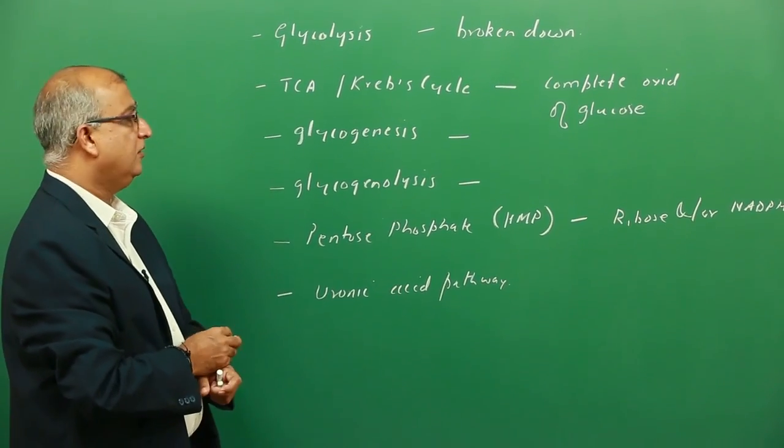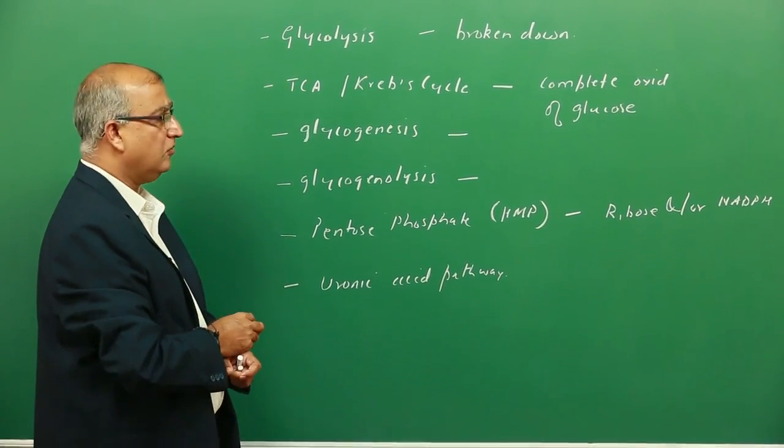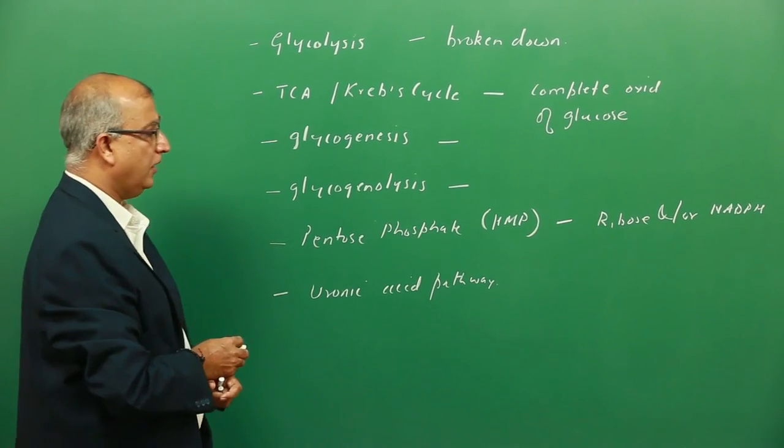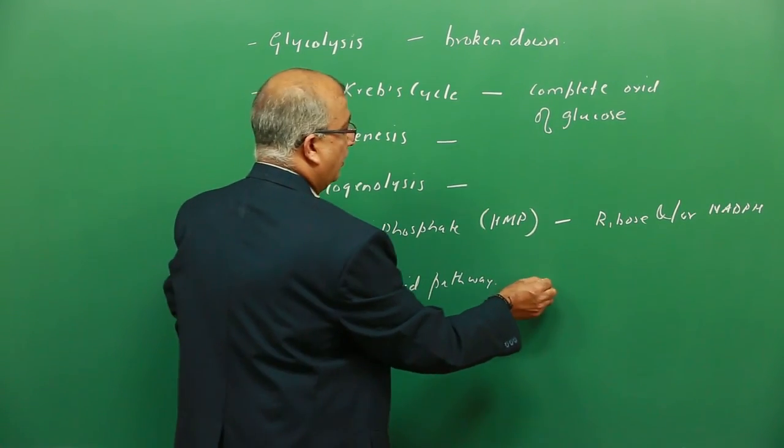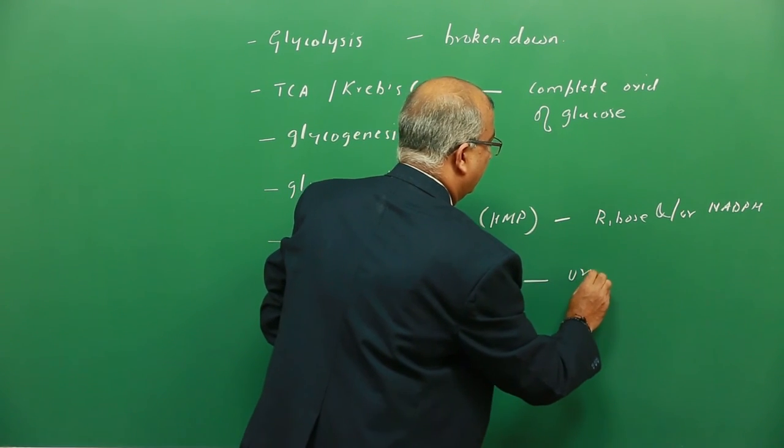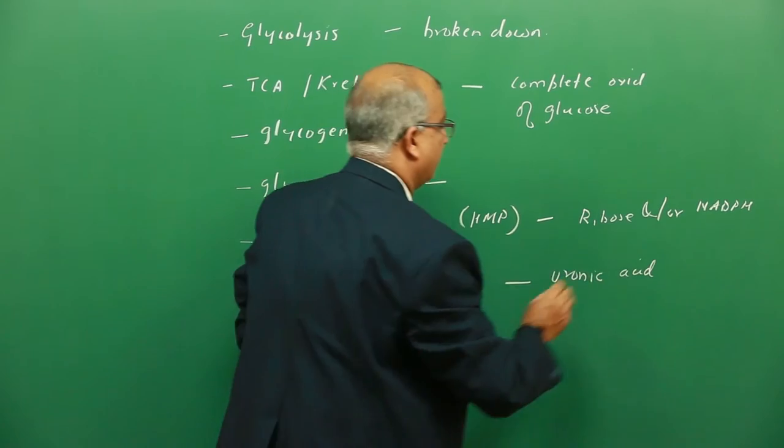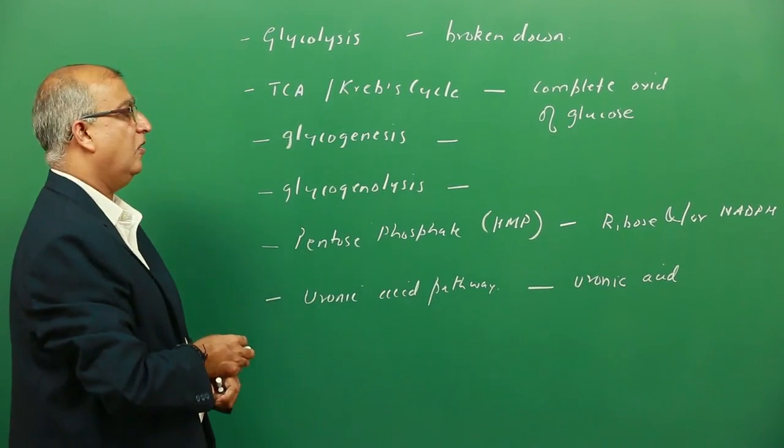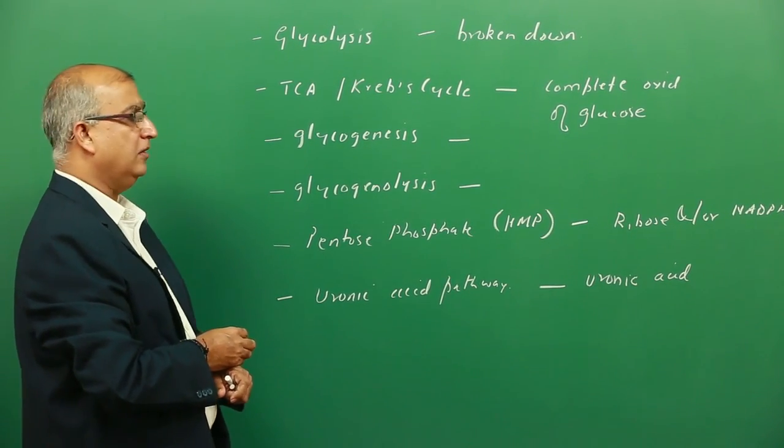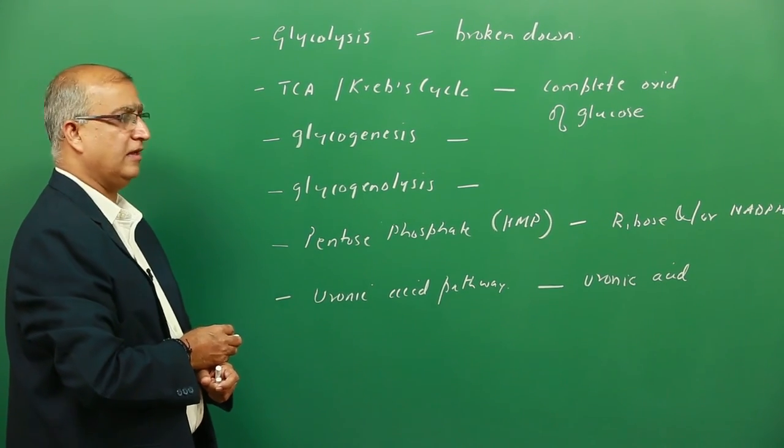Likewise, the uronic acid pathway is also not an energy yielding pathway, but has a role of producing uronic acids which can be used as either precursors for cofactors or for production of other polymers, for example hyaluronic acid.